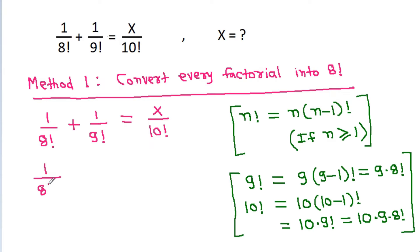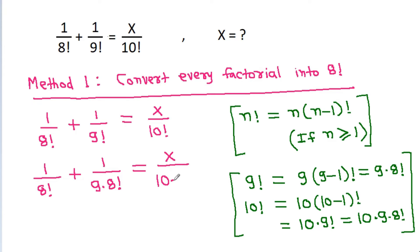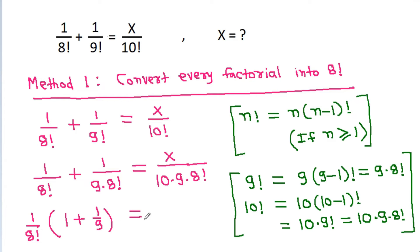So it is 1 by 8 factorial plus 1 by 9 factorial — and 9 factorial is 9 times 8 factorial — that is equal to x by 10 factorial, which is 10 times 9 times 8 factorial. Here we can take 1 by 8 factorial common, and it becomes 1 plus 1 by 9, equal to x by 10 times 9 times 8 factorial.